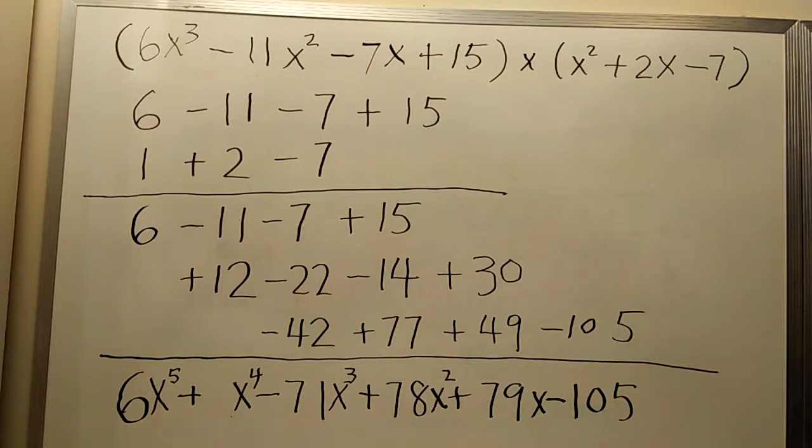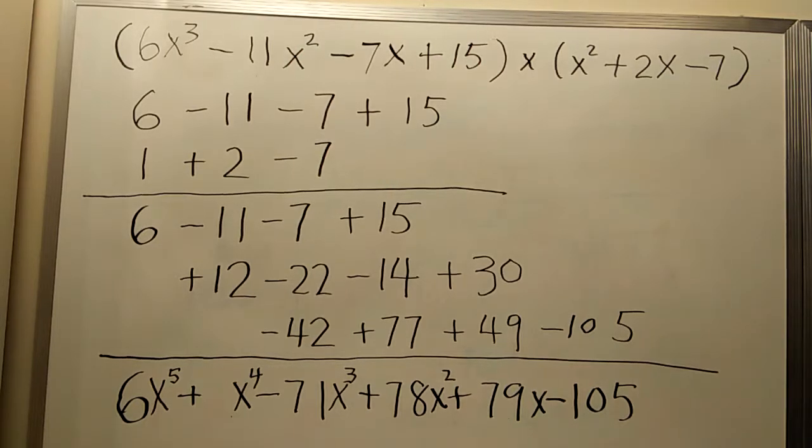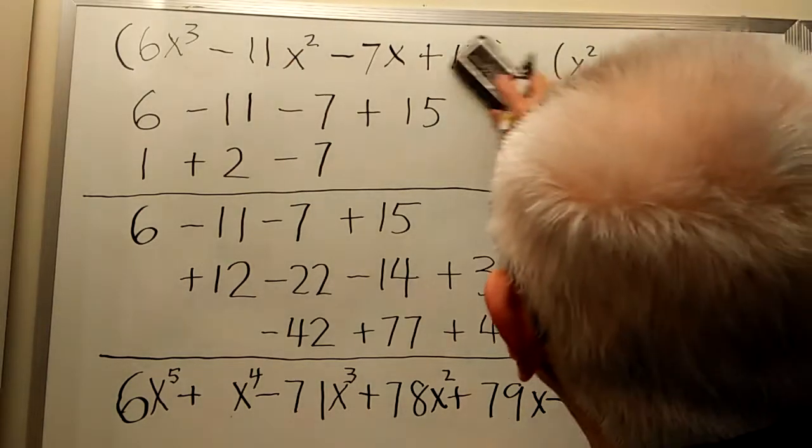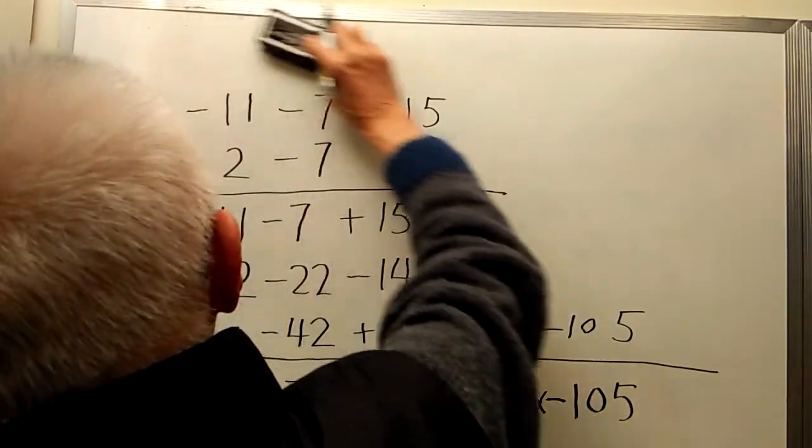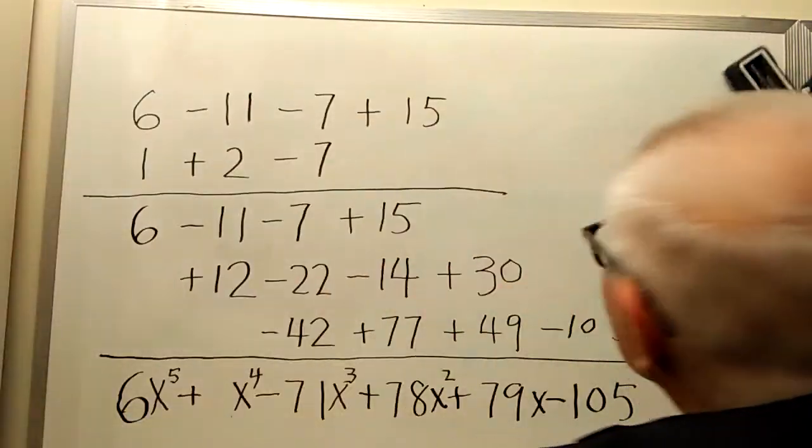This is the power 5, x⁵ plus x⁴ minus 7x³ plus 18x² plus 79x minus 105. This is my final answer.